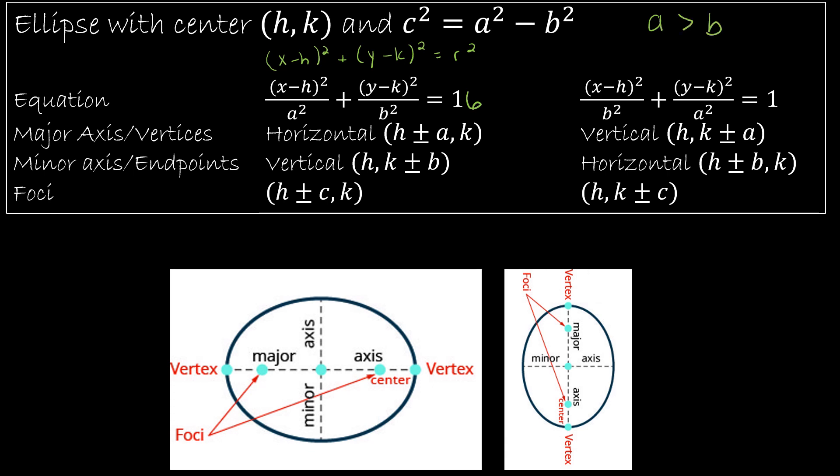So if a were equal to b, it would be a circle. And if a is greater than b, then it's either an ellipse with the major axis on the x-axis or with the major axis on the y. So I'm going to get rid of all my markings because I want to keep it nice and clean for you to refer back to. But I will keep the a is greater than b because that's important.